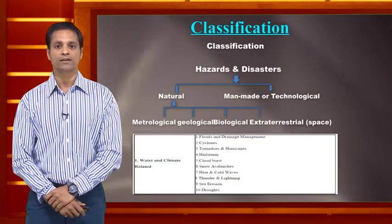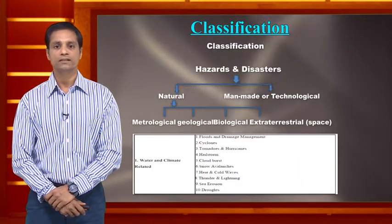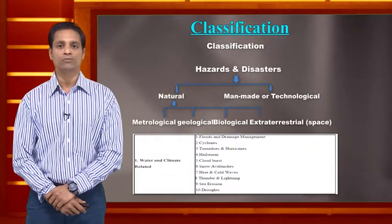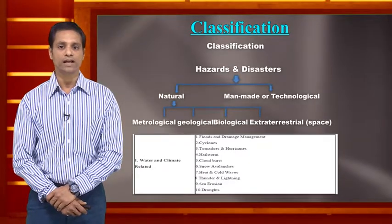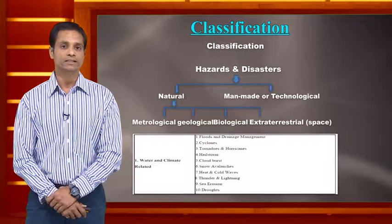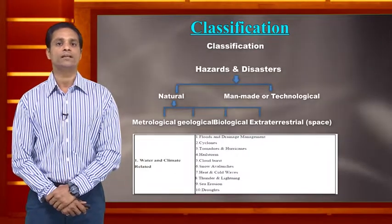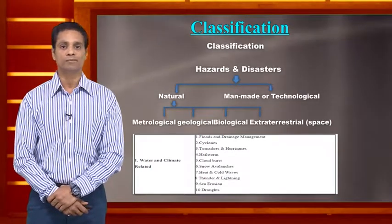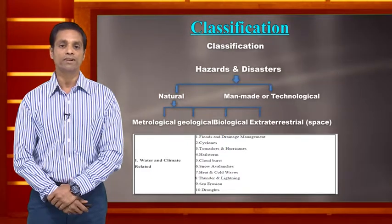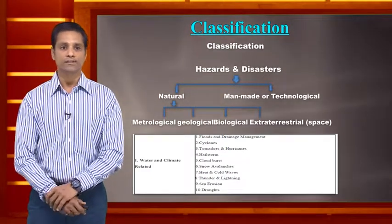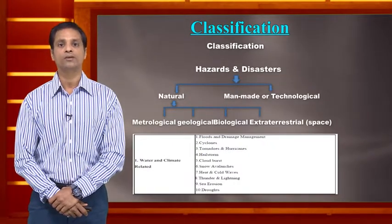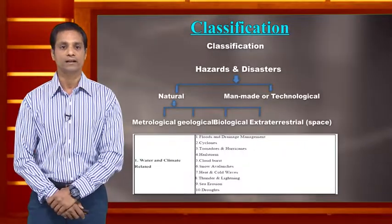Let us briefly classify hazards or disasters. They are typically of two natures: natural and man-made. For water-related disasters, flooding is an example of a natural disaster. However, the flooding in Mumbai due to improper drainage facilities is an example of a man-made disaster.